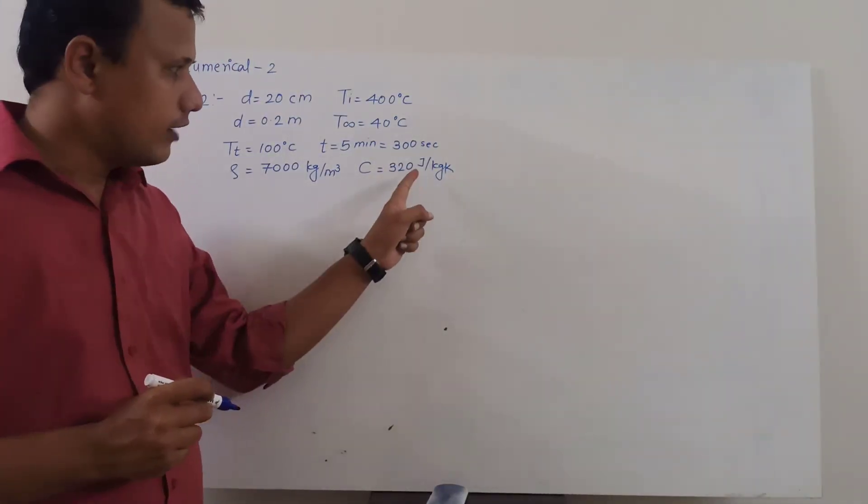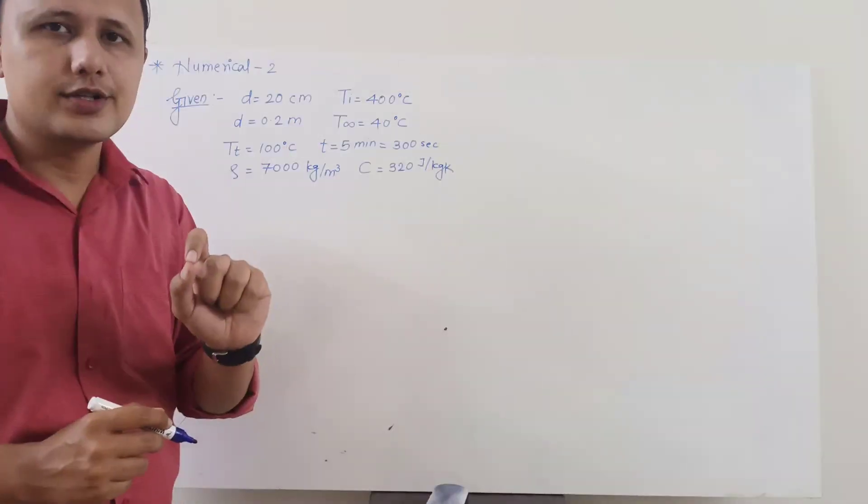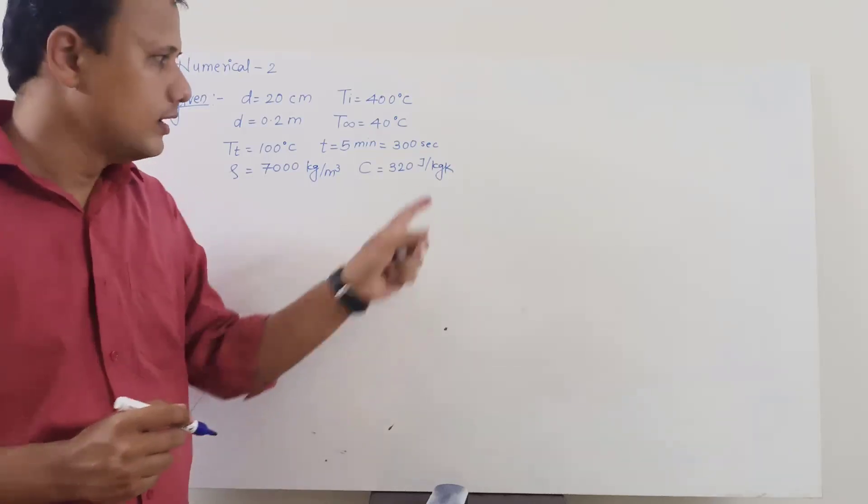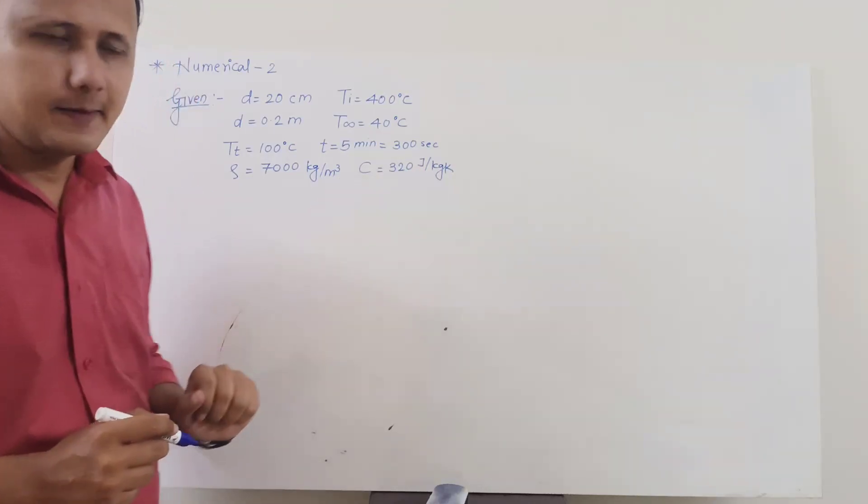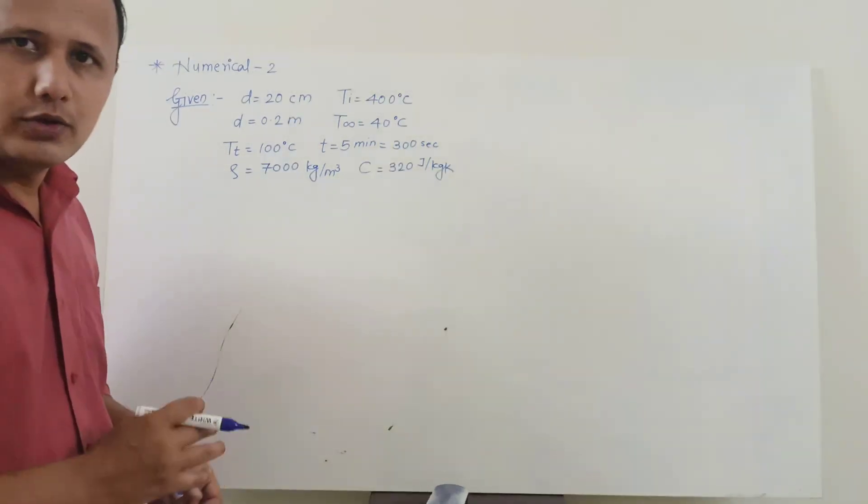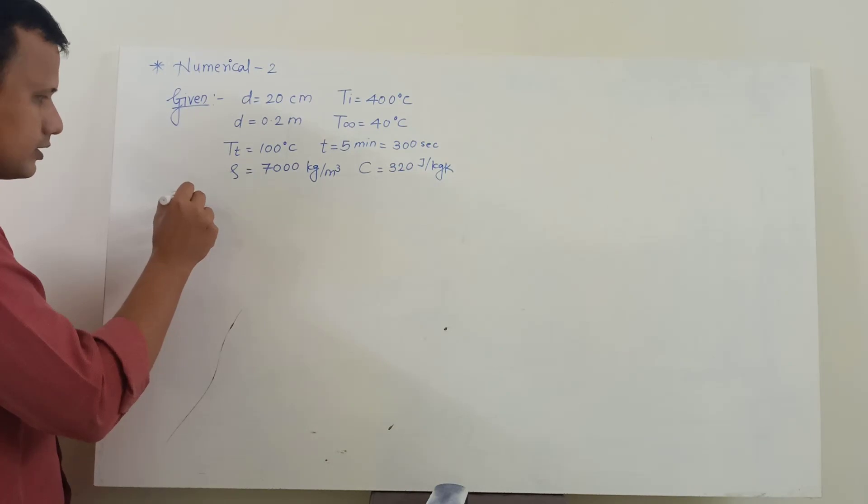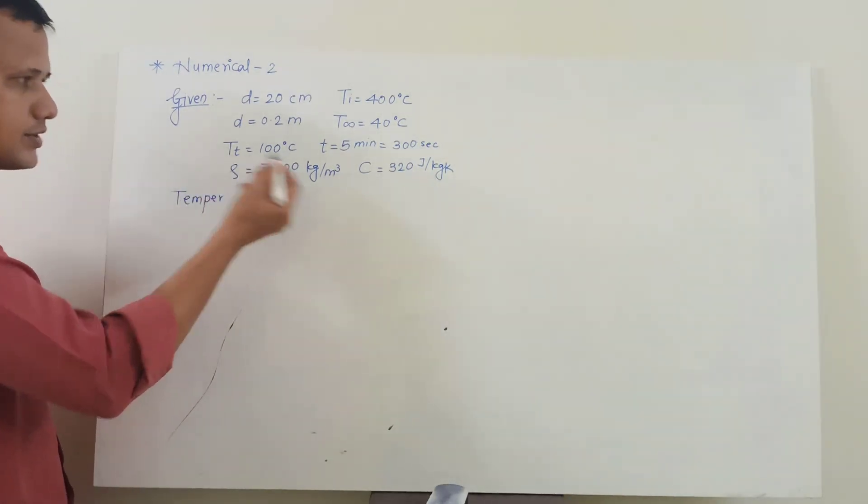And then specific heat of that cast iron ball is given as 320 Joule per kg Kelvin. Remember if the specific heat is given in kilojoule we have to convert it into Joule because again the same reason that unit of heat transfer coefficient will be Joule per second.